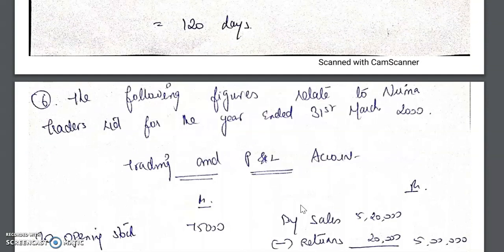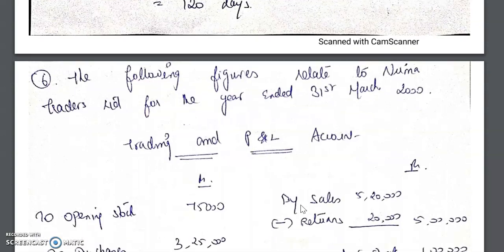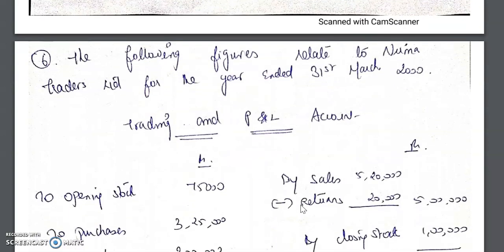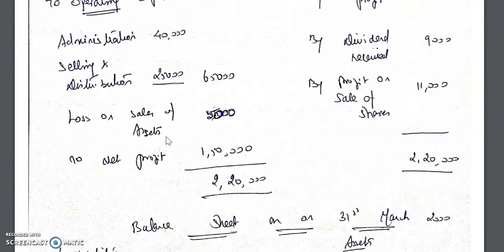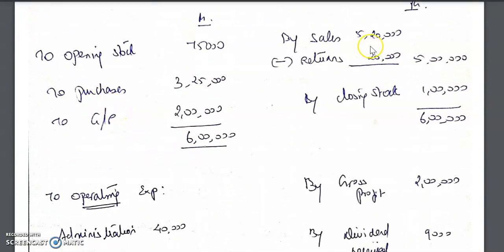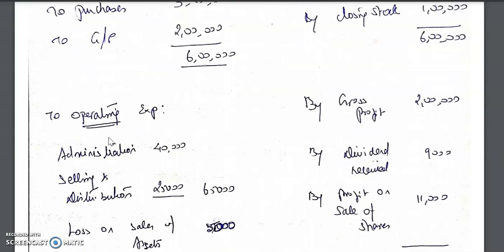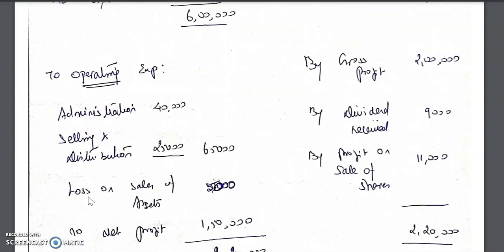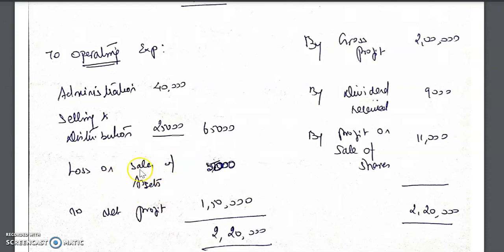The next sum covers all the ratios in detail — close to nine ratios — and serves as a comprehensive summary of how we find out all the ratios together. They have given a trading account for Nirma Traders, along with a profit and loss account. In the trading account, we have opening stock, purchases, closing stock, sales, and sales returns, along with the gross profit.